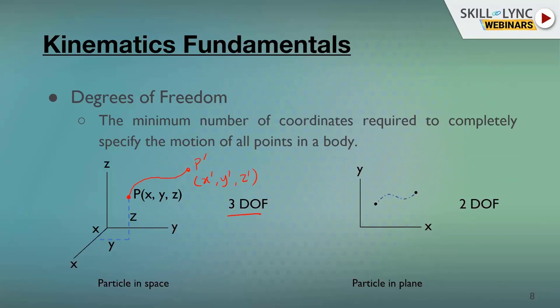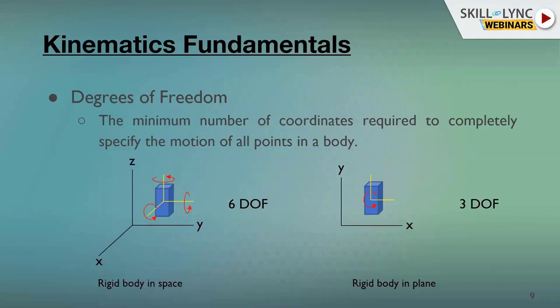If the same particle is moving only in a plane — restricted from moving in the third dimension — it will have only two coordinates x and y. By noting these coordinates we know the position of the particle at every instant of time, so it has two degrees of freedom.